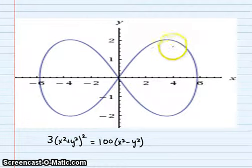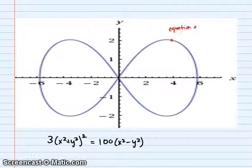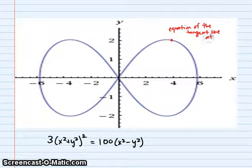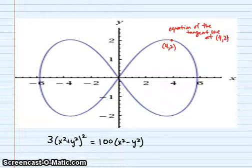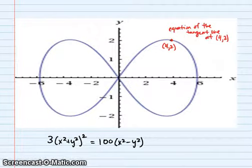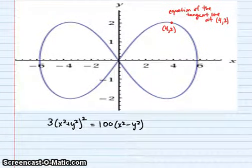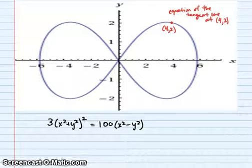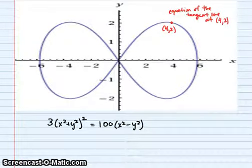We want to find the equation of the tangent line at the point (4, 2). The same exact process we used when we defined our functions explicitly is going to apply here. First we need the point, which is already given, and then we need the slope. To find the slope we need the derivative. Let's just go for it — we're going to need a couple of different rules.